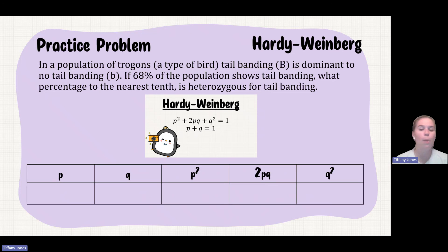So again, we're going to use our chart. And we always want to start with Q². So the question tells me 68% show tail banding. But tail banding is a dominant trait. So before I can get started, I actually have to go and say, well, 1 minus 0.68.